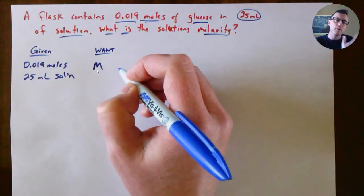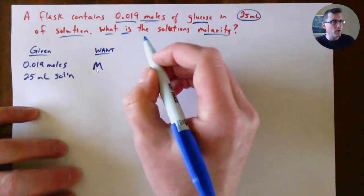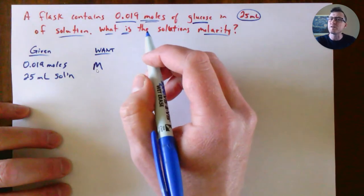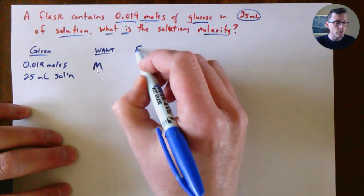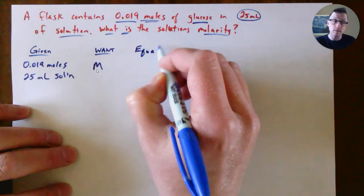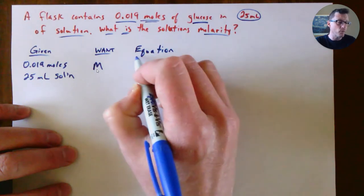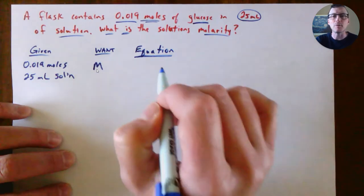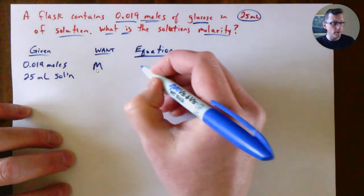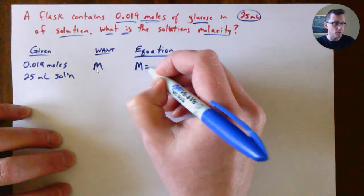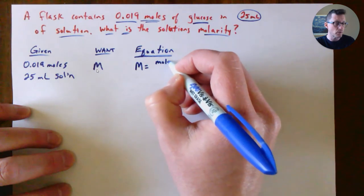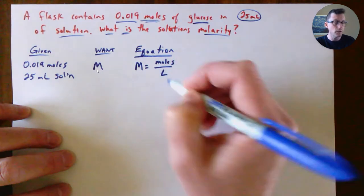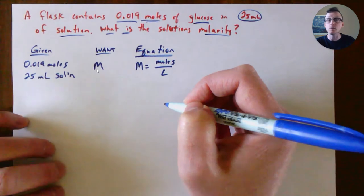Whenever there is some calculation, go back to your equation sheet and say, what equation or equations do I have where we are calculating something? The equation for molarity is M equals moles over liters.